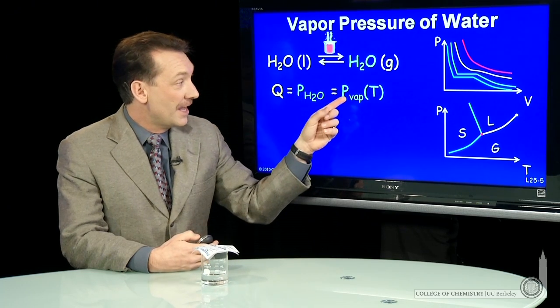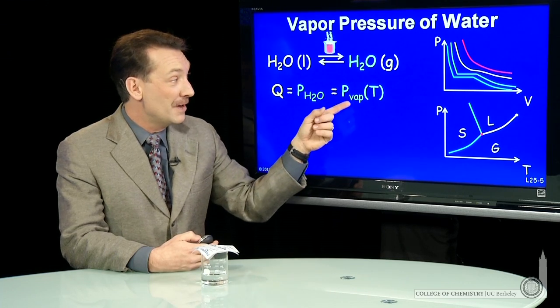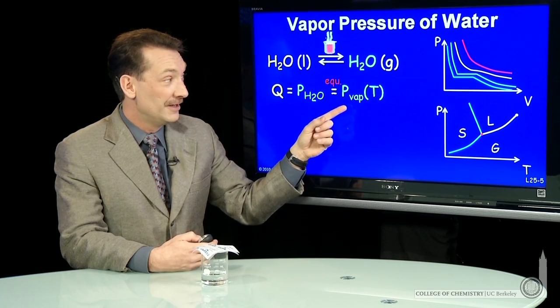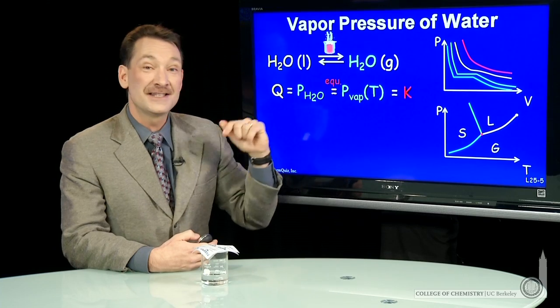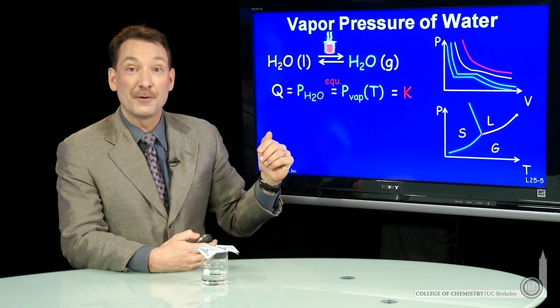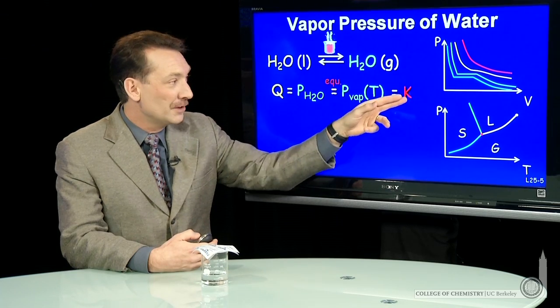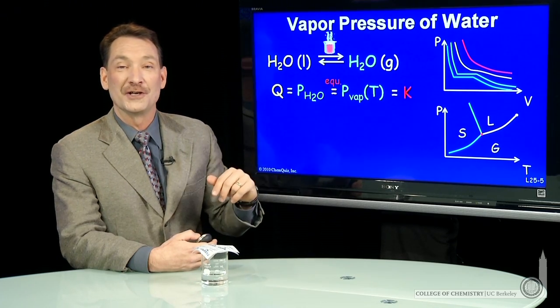That's the vapor pressure of water. When this is an equilibrium, that will become the vapor pressure. So the vapor pressure is the equilibrium constant. In this special case of evaporation, or the liquid gas equilibrium, equilibrium constants are equal to equilibrium vapor pressures.